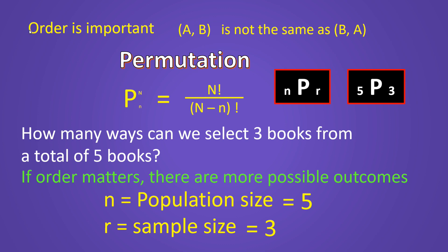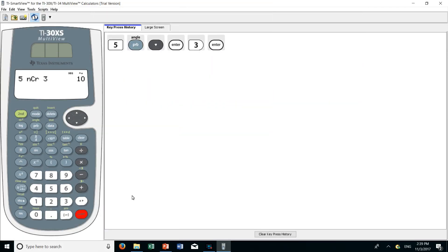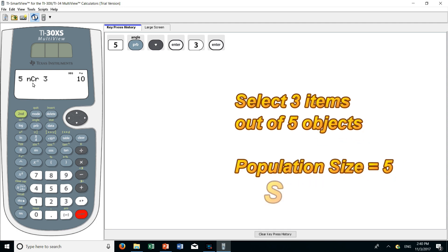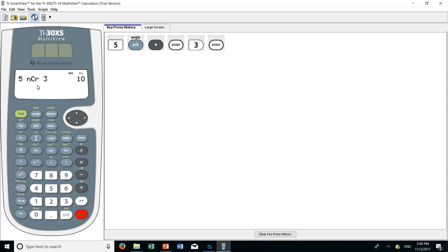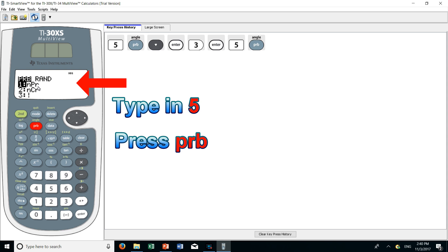Okay, let's see how this is done on the calculator. I've left my previous example here. So you can see five, nCr, and three gave us an answer of ten. There are ten different combinations of taking three out of five. Now let's do it for permutation. Key in the number five. Press the probability key. We see again the three choices. The first choice is permutation. This time we do want to select that, so let's press enter.